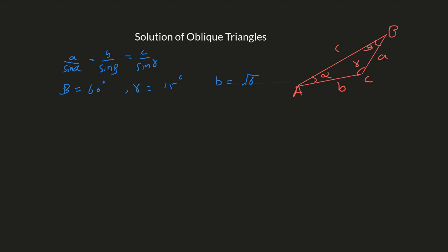We can easily figure out the third angle using the fact that alpha plus beta plus gamma equals 180 degrees. Since gamma and beta are given, that is: alpha plus 60 degrees plus 15 degrees equals 180 degrees. So alpha equals 180 minus 75, which is 105 degrees.